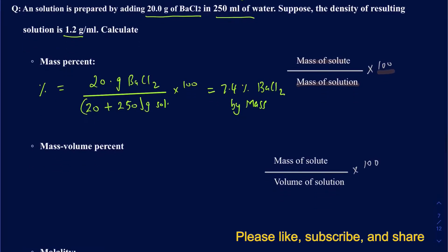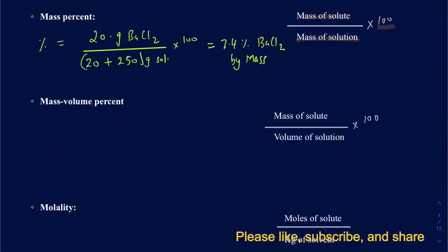For mass volume percent, we need the mass of the solute — which we already have — and the volume of the solution. The mass is measured in grams and the volume in milliliters, and then you multiply by 100.